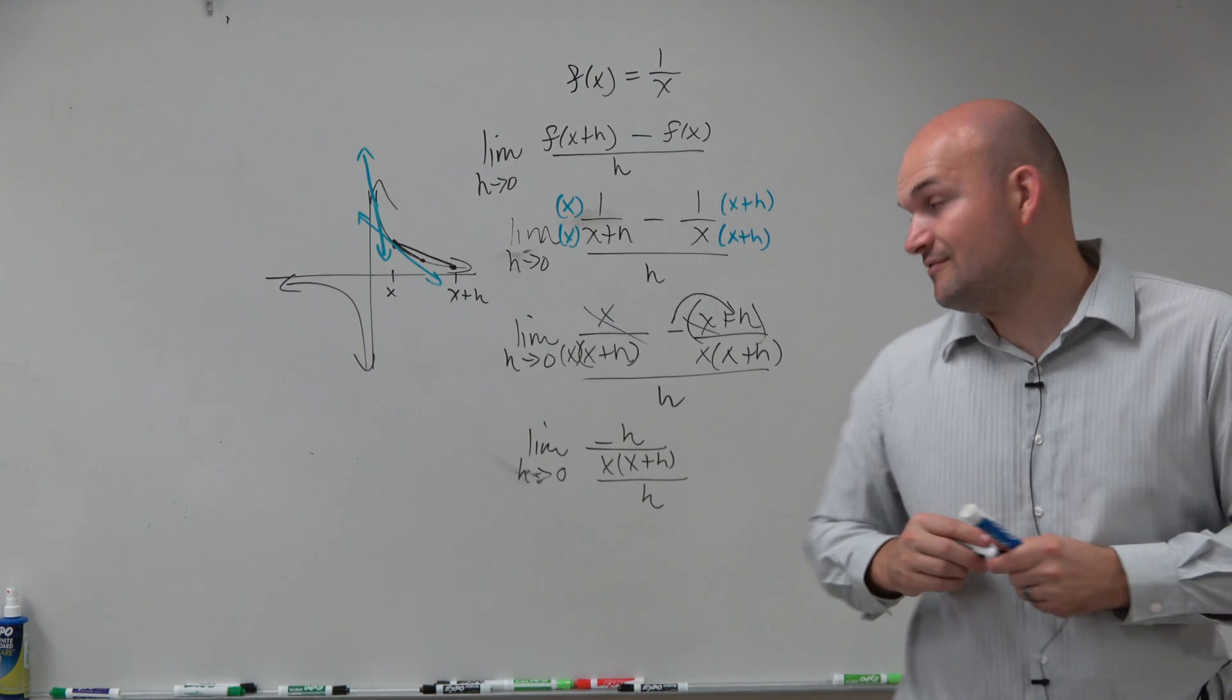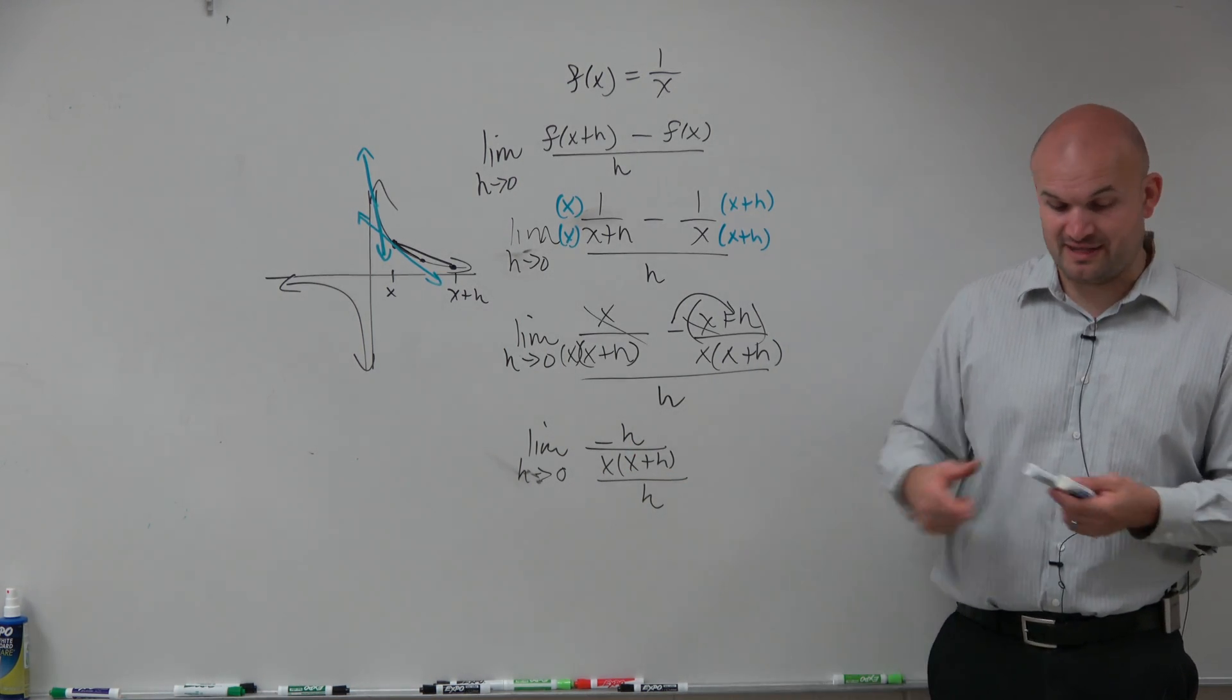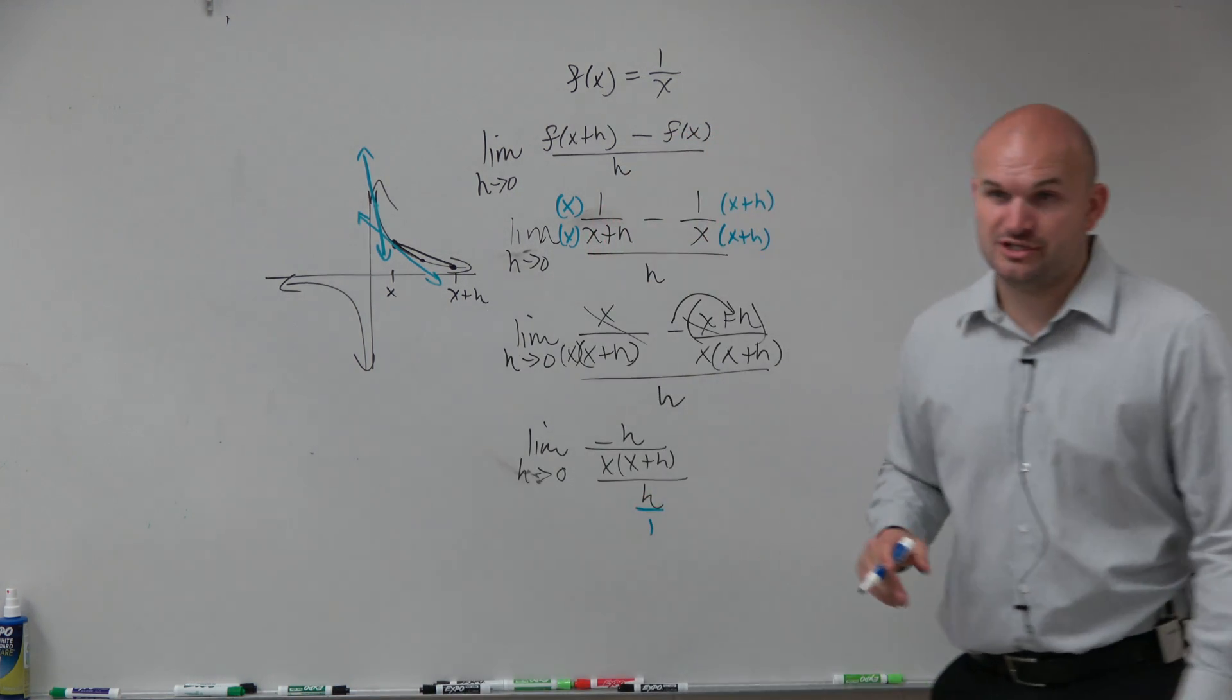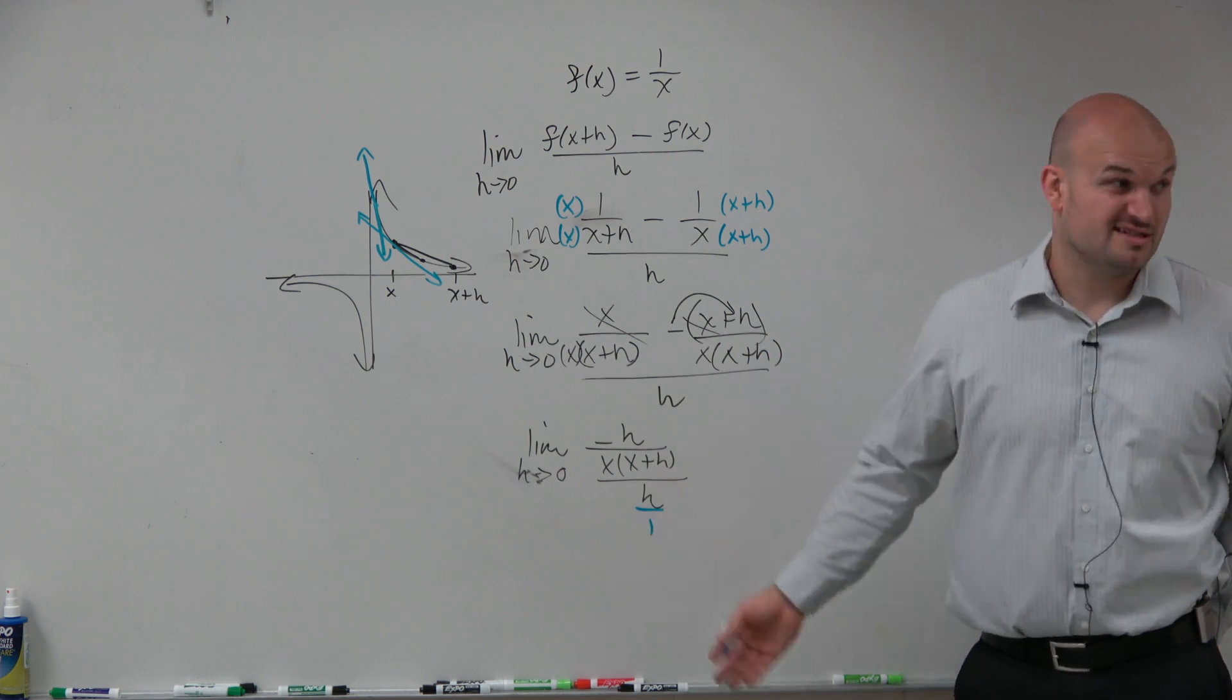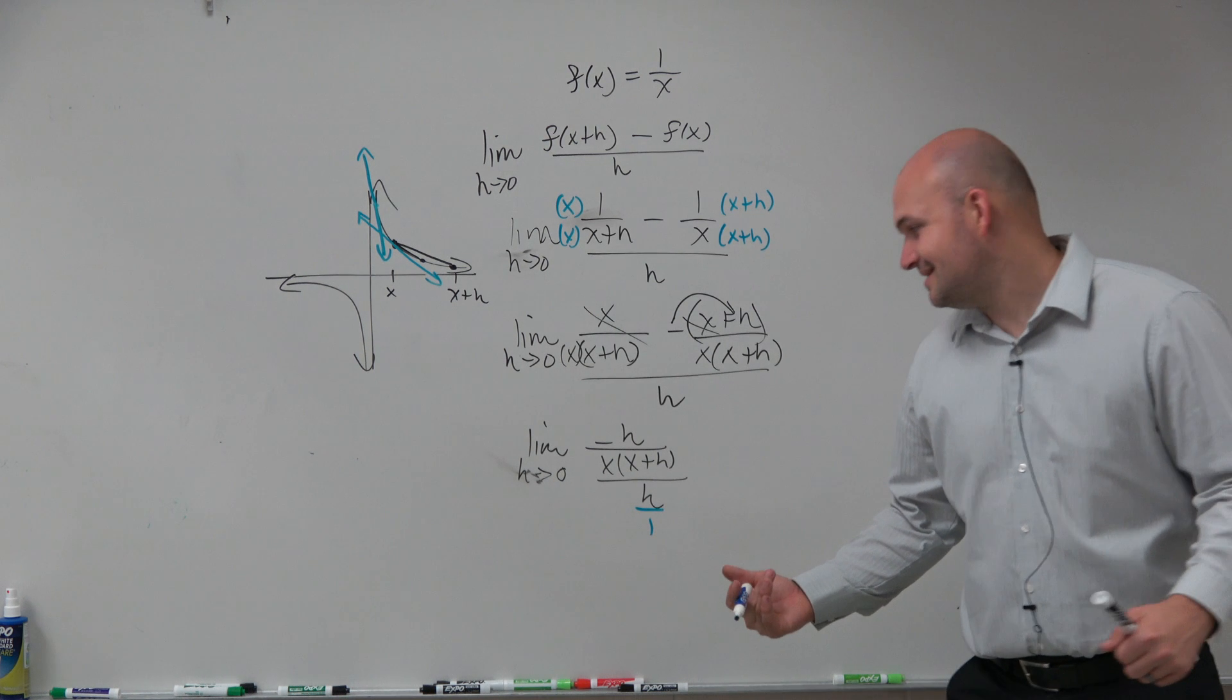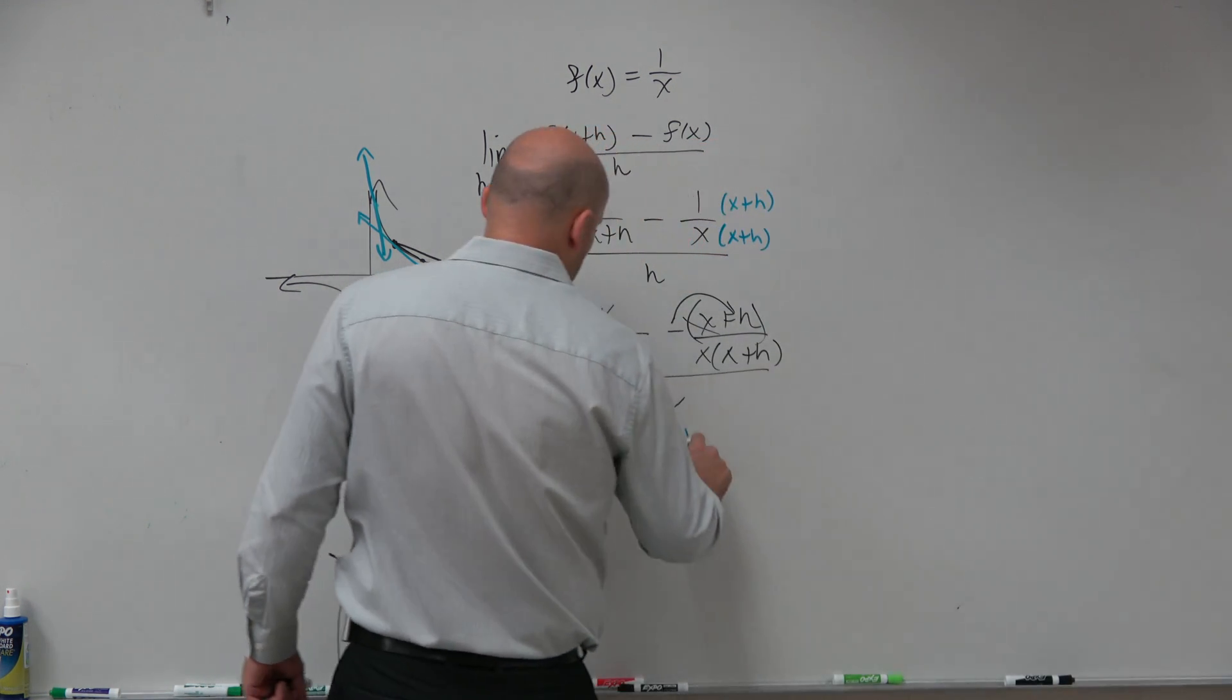So basically we have a fraction divided by h. So the easy way to simplify this is to make the h a fraction. Then we could say we have a fraction in the numerator, a fraction in the denominator. To get rid of the fraction we multiply by the reciprocal, 1 over h.